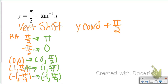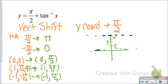Now I just plot those points and asymptotes. I've got an asymptote at 0 and an asymptote at π, with labels at π/4, π/2, and 3π/4. The graph goes through (0, π/2), and there's my tangent inverse function — shifted up π/2.